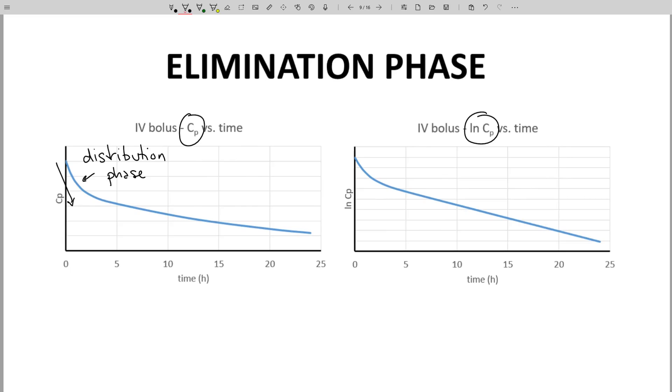During the distribution phase, CP drops primarily because the molecule is entering other tissues. It's not leaving the body.